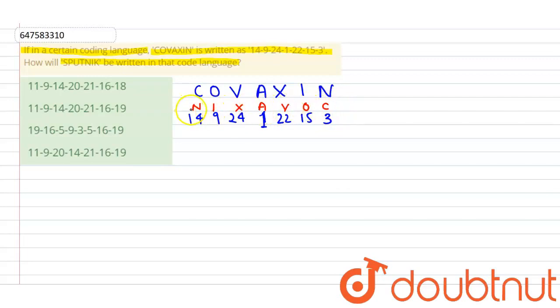So for Sputnik backwards: K-I-N-T-U-P-S. Now we need their place values. K's place value is 11, I is 9, N is 14, T is 20, U is 21, P is 16, and S is 19. Thus we have our answer,